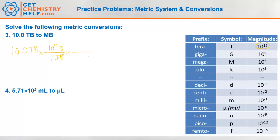Now we have bytes on top, so we need bytes down here. We're trying to turn bytes into megabytes, so we'll put megabytes on top. What does MEGA mean? MEGA is 10 to the 6th. A megabyte is 10 to the 6th bytes — it's always going to be opposite of the prefix. We'll put a 1 here, so now bytes cancels. Punch that in your scientific calculator, and you'll probably get a 1 with a whole bunch of zeros. Let's go ahead and convert that into scientific notation.